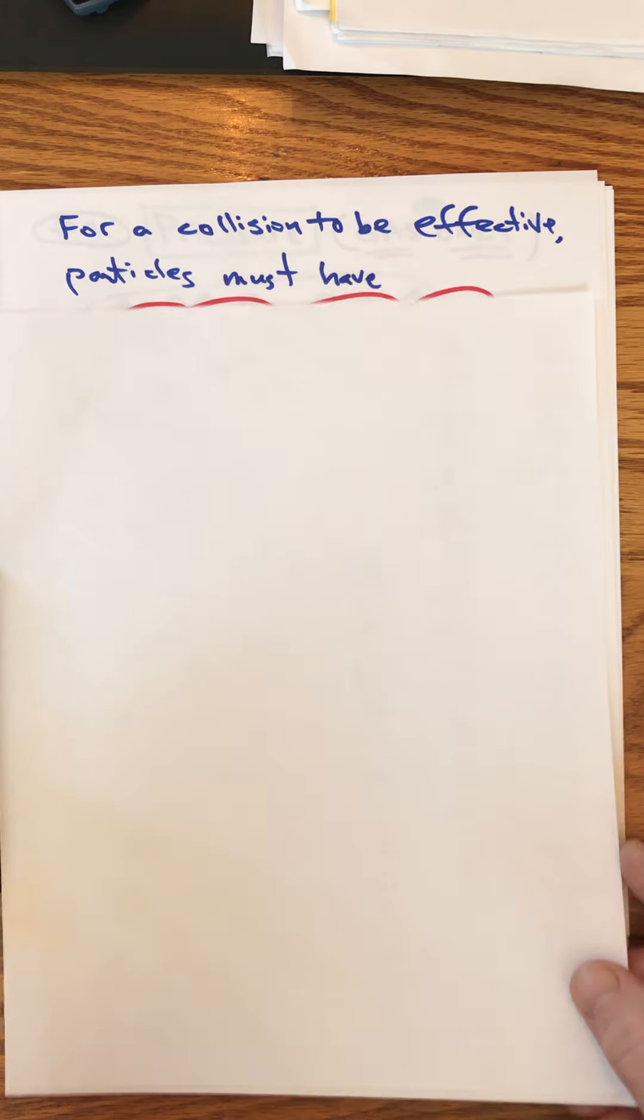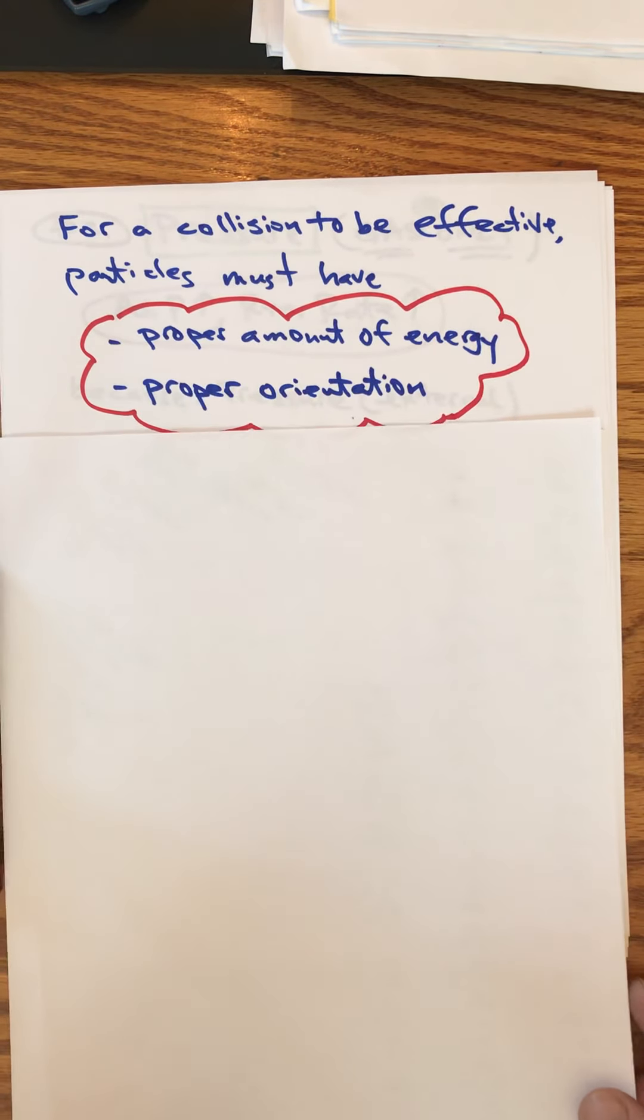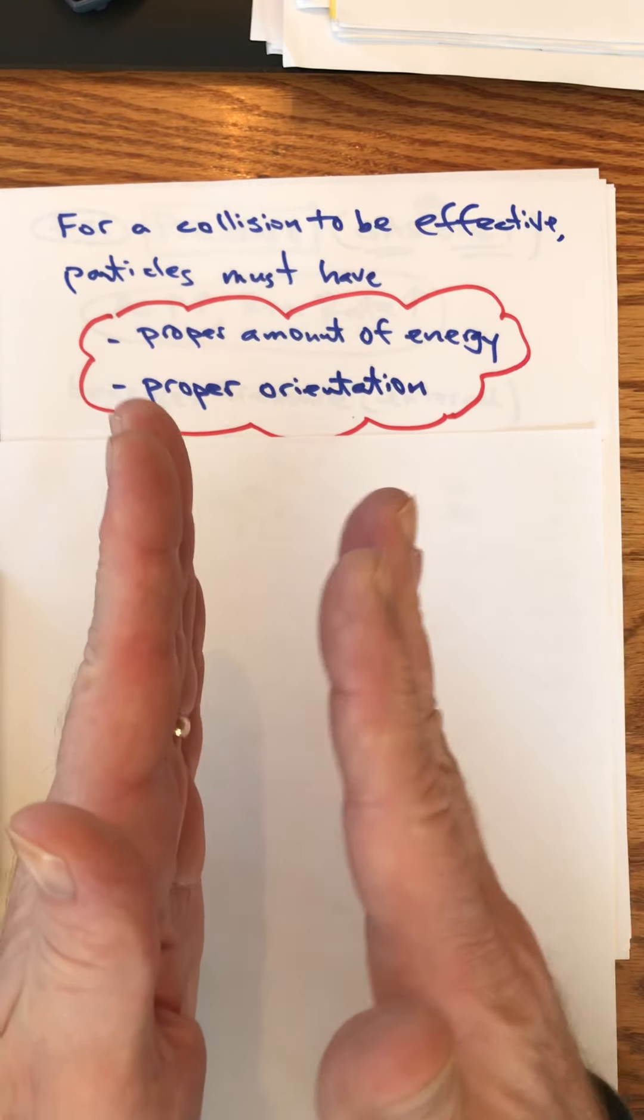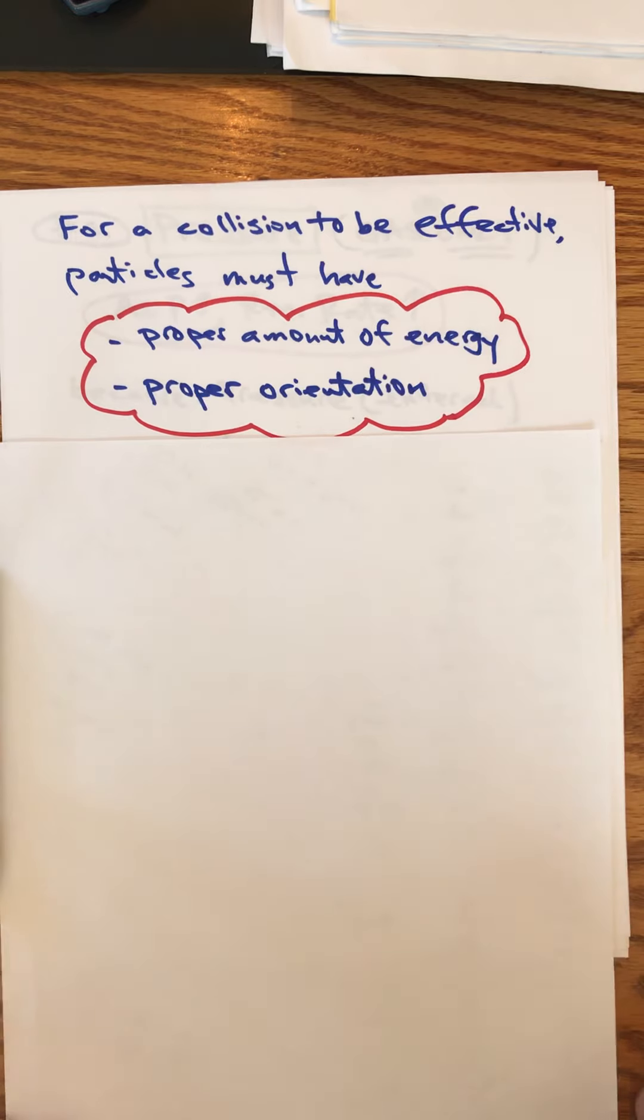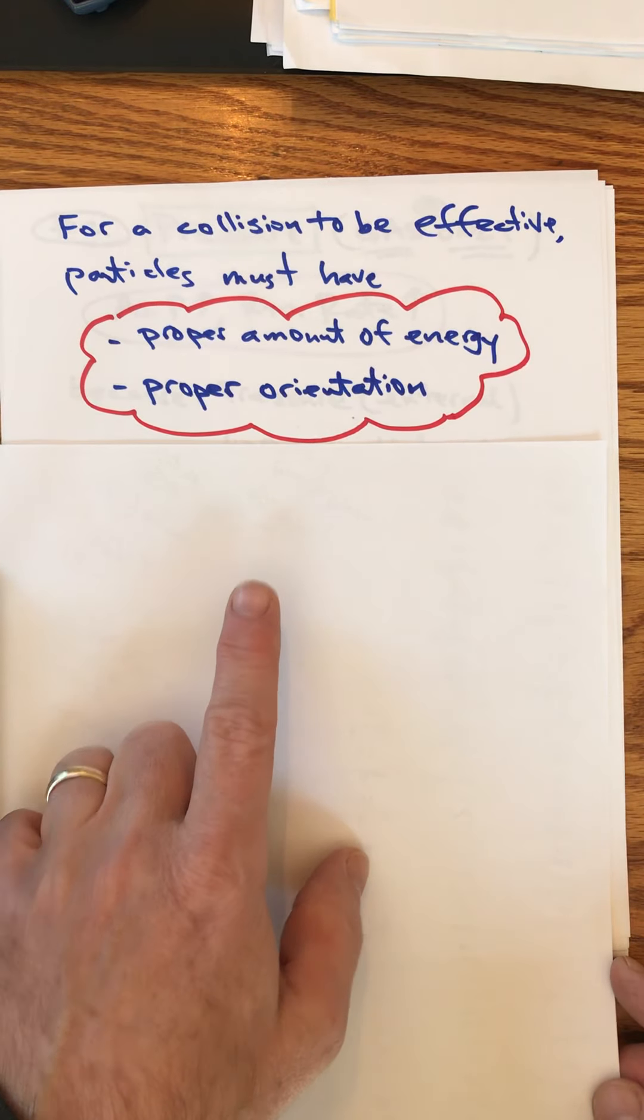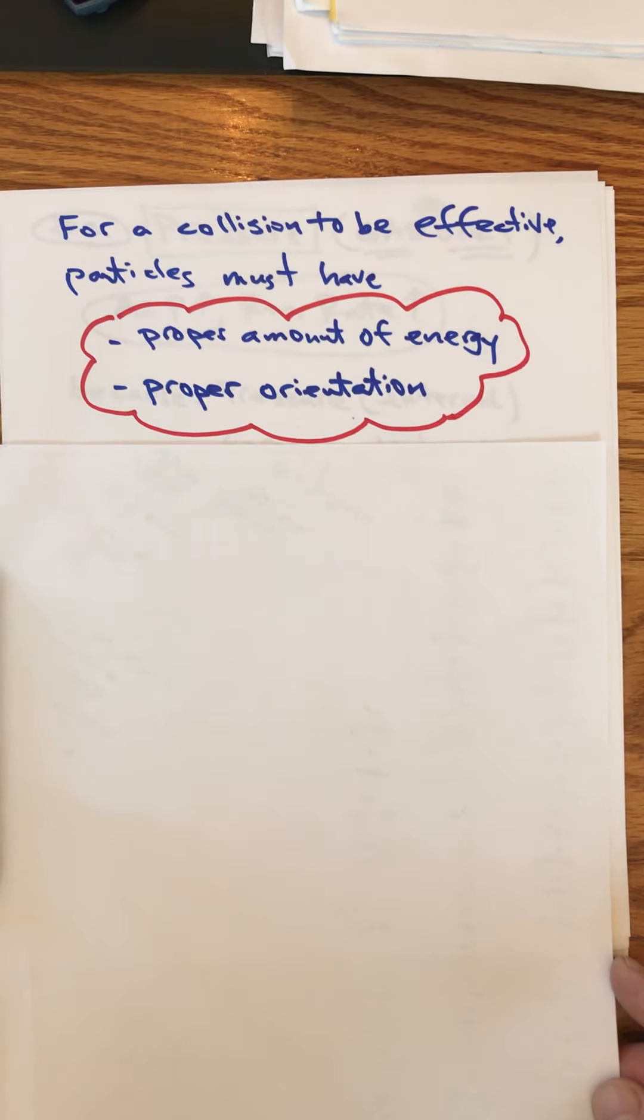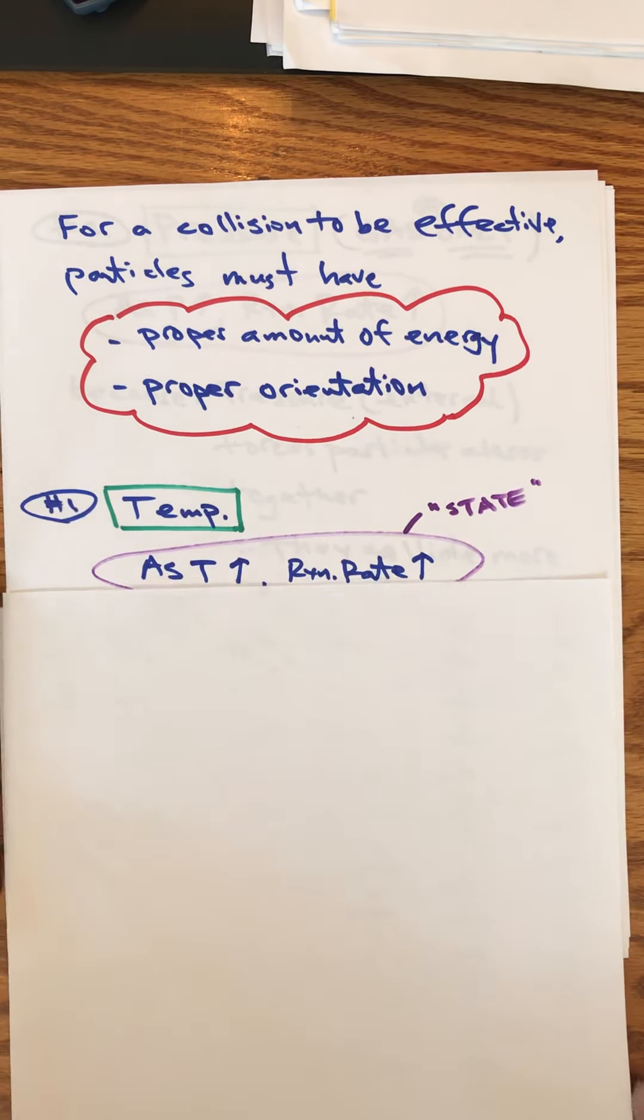It's got to have the proper amount of energy, but it's also got to have proper orientation. If we go back to our analogy on eggs, if the eggs are moving fast enough but they just barely side swipe each other, they're not going to collide very well. They're not going to break the eggs, you might have a little scratch on the side. So these are the two factors: increase the amount of energy or give it the right amount of energy and give it proper orientation.